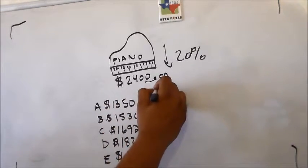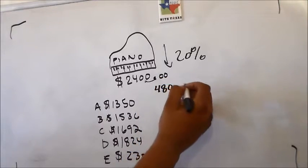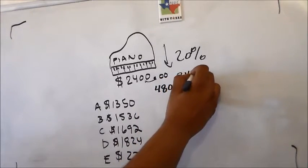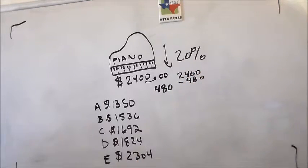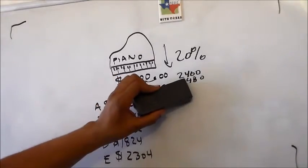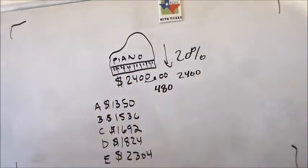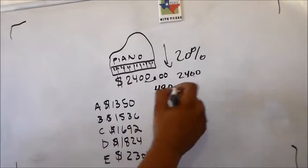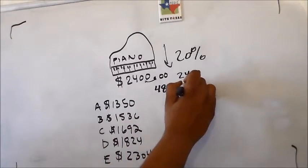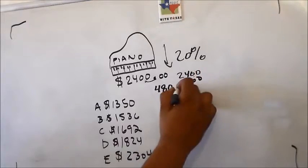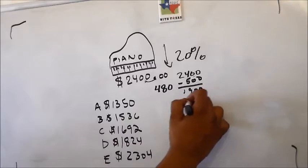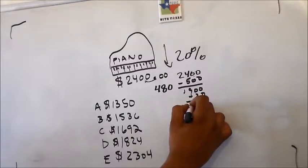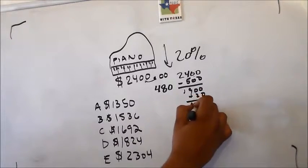So I would take $2,400, and then I would subtract $480. Or just with my rapid math technique, I wouldn't even deal with the $480. I would subtract $500, and then add $20. So I would subtract $500, and then $1,900, just for rapid math, and then add plus $20, which would bring me down to $1,920.